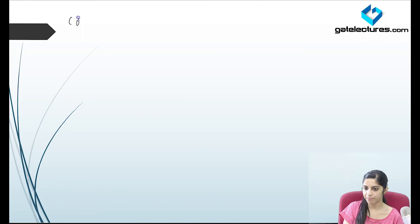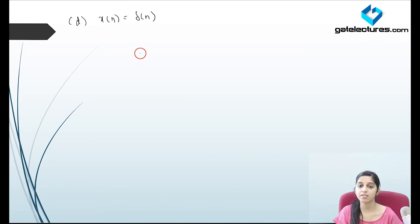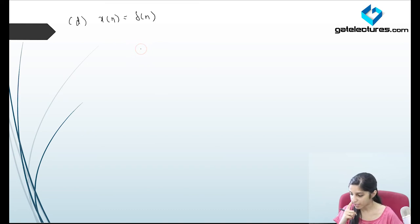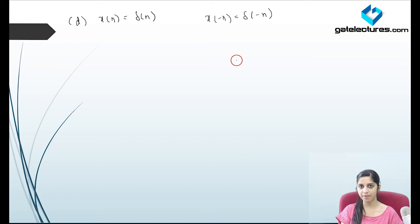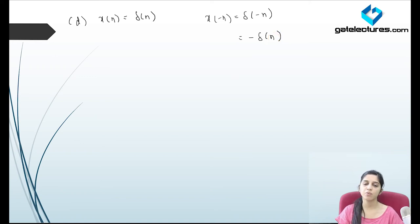Now look at the next part: x(n) is delta(n). What is x(minus n)? It is delta(minus n) equals delta(n), because time reversal does not apply to the unit impulse function — it occurs only for n equals 0. Even if you add a minus sign to its argument, it does not get affected, since delta occurs only for n equals 0.